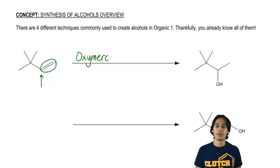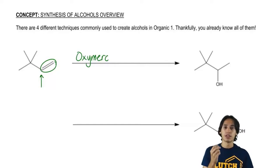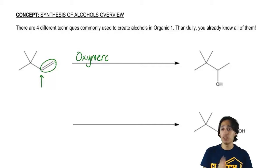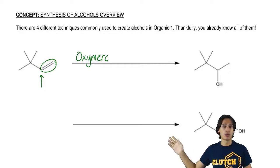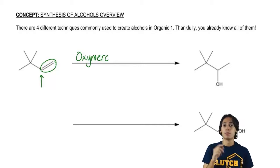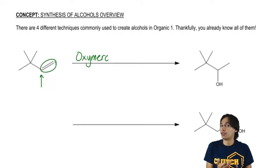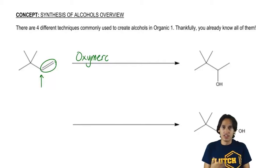Why is that? Because oxymercuration is an addition reaction that adds Markovnikov alcohol — which is correct here, since that is the Markovnikov or more substituted location. But there's another thing that's special about oxymerc, which is that there's no carbocation in the intermediate.